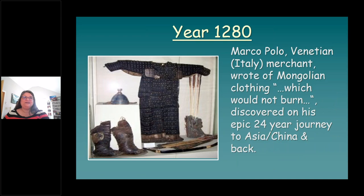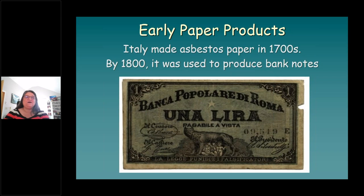Knights of the first crusade are believed to have used asbestos bags to hurl flaming pitch and tar at the enemy using catapults. During Marco Polo's epic journey across the Asian continent to China and back — from around 1025 to 1280 — he encountered clothing which would not burn in Mongolia. Italy made asbestos paper in the 1700s, and by 1800 it was being used to produce banknotes. A purse made of fireproof asbestos is now part of London's Natural History Museum collection, brought to England by Benjamin Franklin during his first visit there in 1725. A Parisian fire brigade in the mid-1850s wore jackets and helmets made from asbestos.